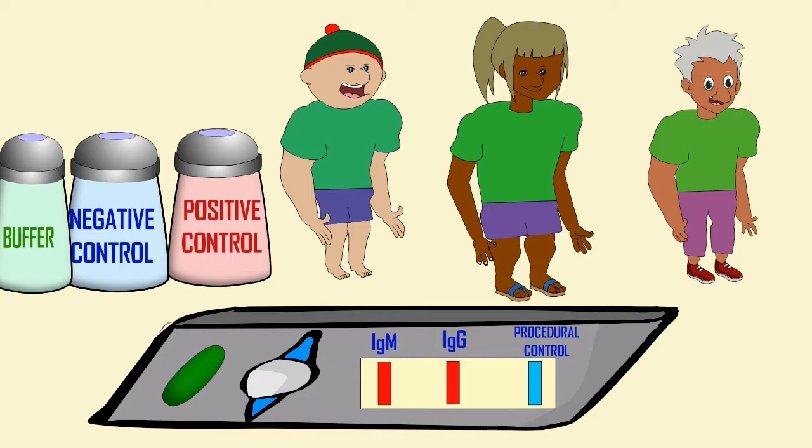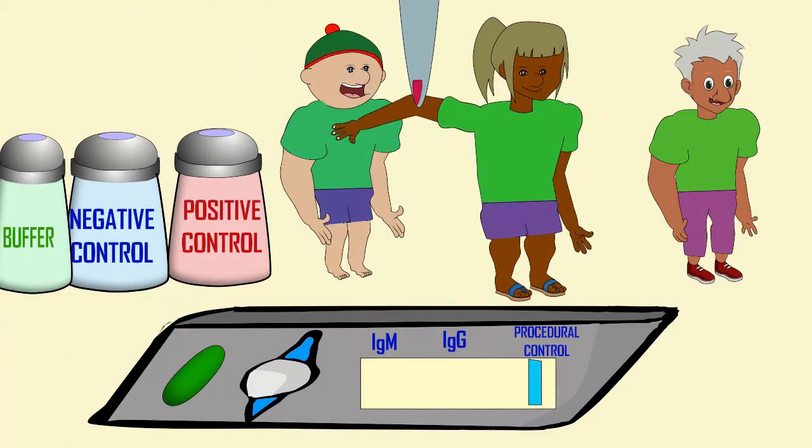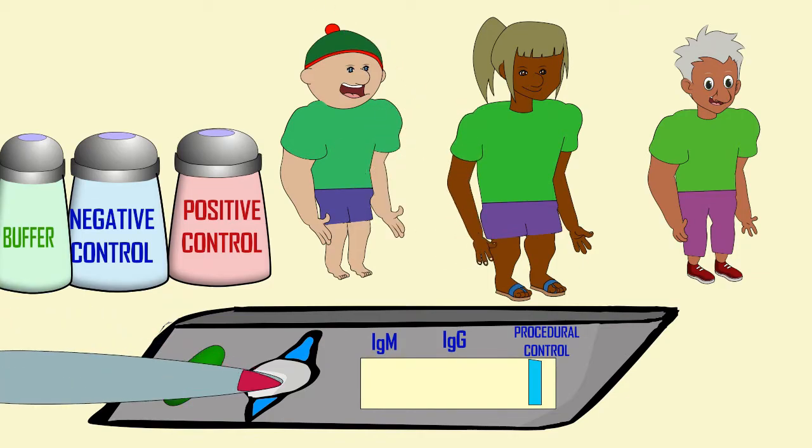If a blue line were to appear we would have to discard the results and try again. Patient two does not have red lines forming for either IgM or IgG, thus they are negative. They are not producing antibodies against coronavirus, meaning that they have not been exposed to coronavirus.